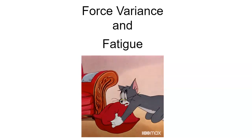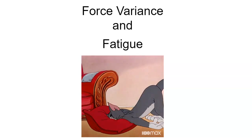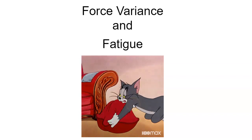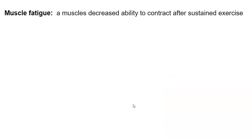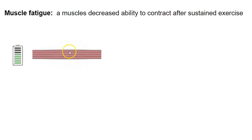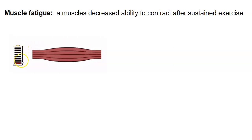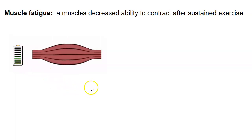In this video, we're going to look at force variance and fatigue — not really this type of fatigue, but muscle fatigue. Muscle fatigue is a muscle's decreased ability to contract after sustained exercise. Here we have a muscle that's exercising with lots of contractions, and this shows the battery sort of being depleted as we go. So that's muscle fatigue.